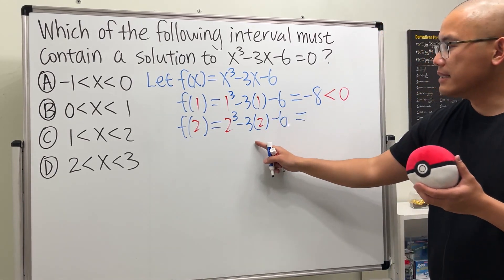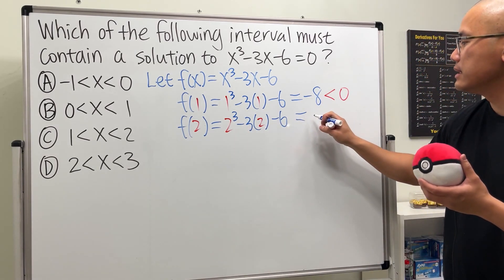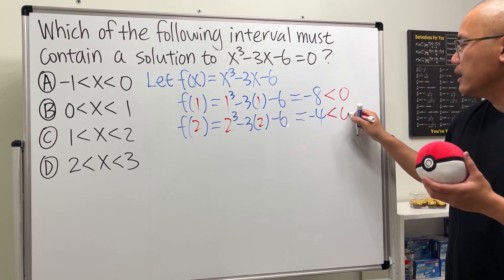This is 8. Minus 6 is 2. 2 minus 6 is negative 4. Okay, again, negative.